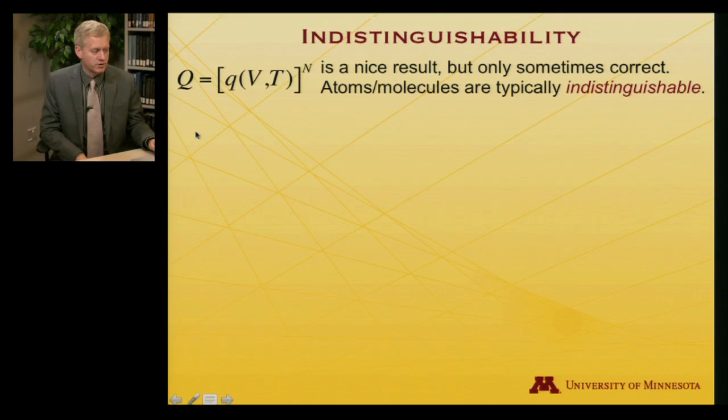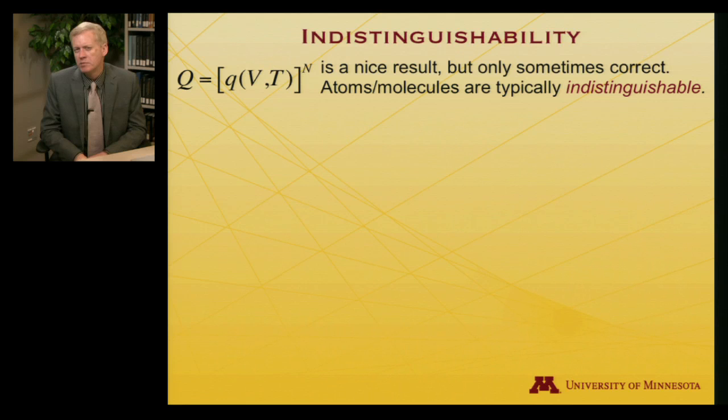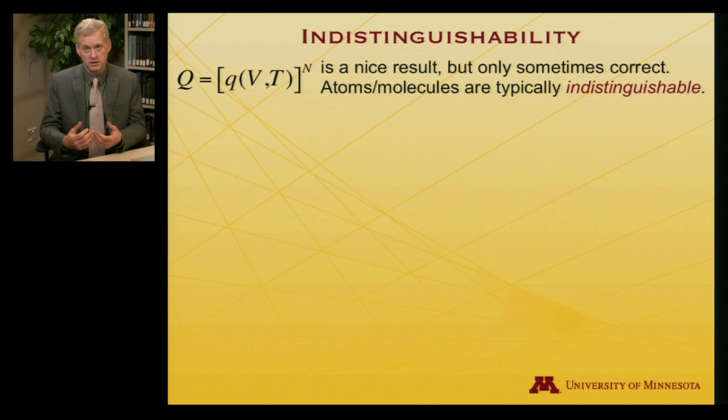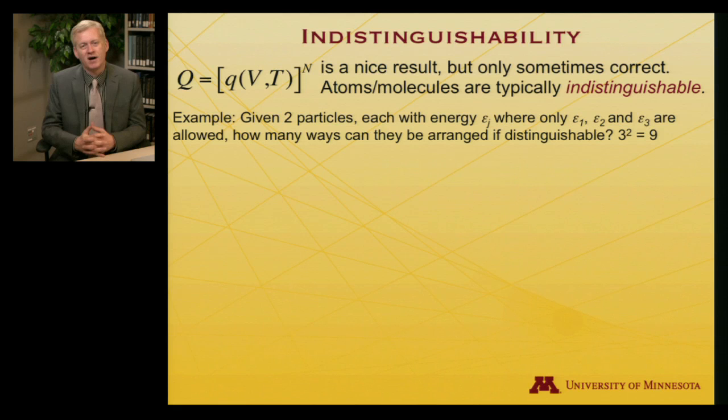Let's talk about indistinguishability. So this result for the ensemble partition function, that it's simply the molecular partition function raised to the nth power, it's very pretty and nice and reasonably easy to work with, but it's only sometimes correct. And the problem is that atoms and molecules are typically indistinguishable. So gas molecules, liquid molecules, they're in a homogeneous mixture, they're moving around, there's no way to label them unless you want to change the number of neutrons in their nuclei, but then you'd need a different kind of partition function. We're talking about everything being the same. Again, identical means indistinguishable.